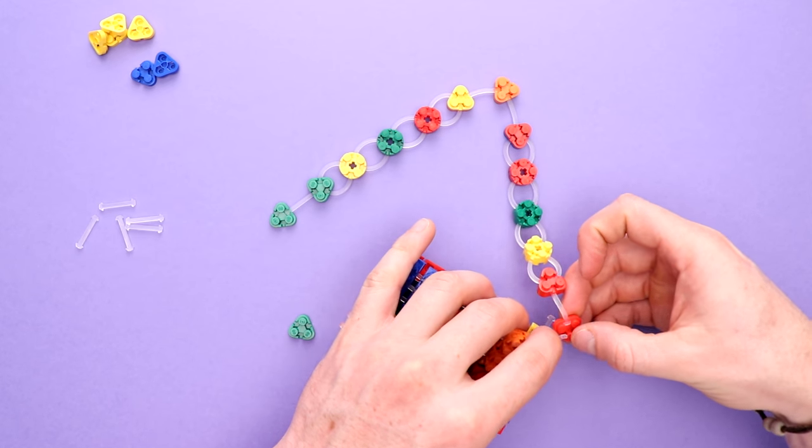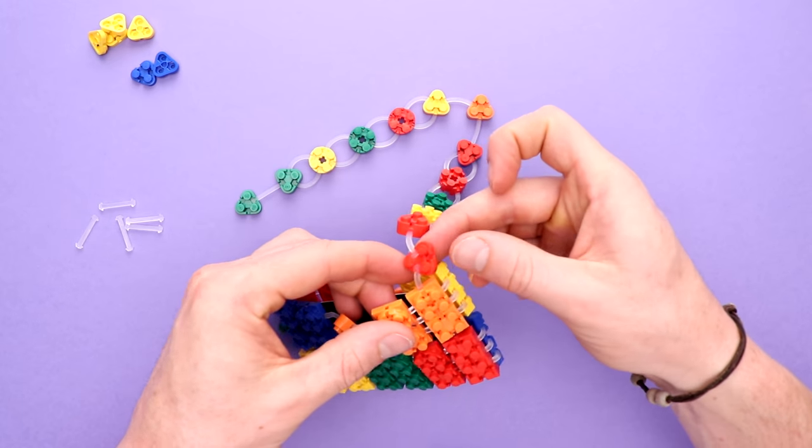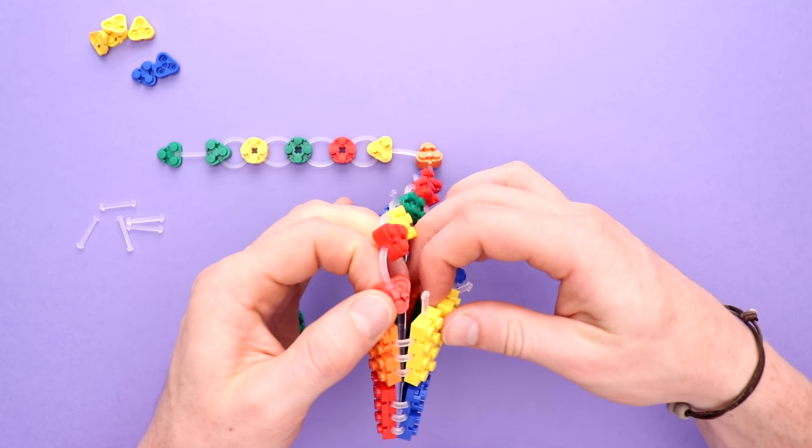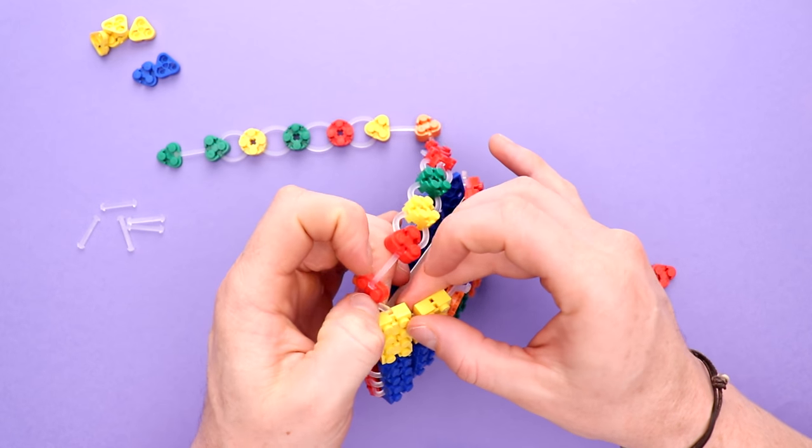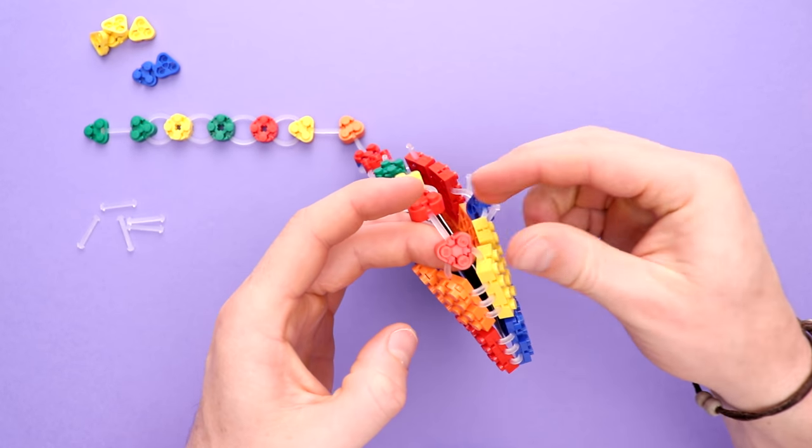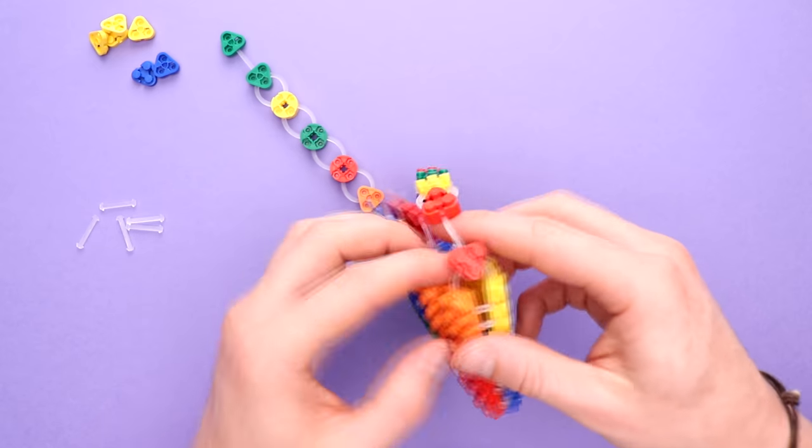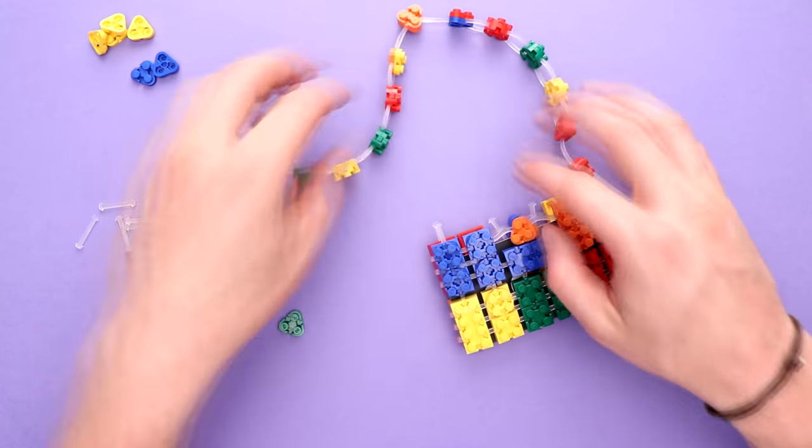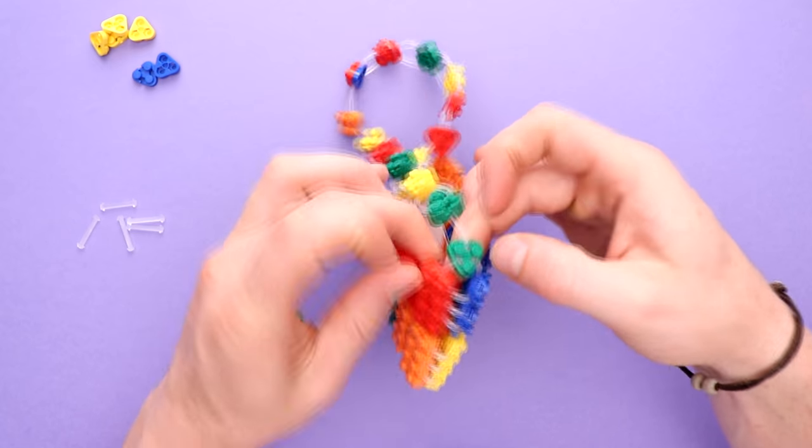So once we've connected all the bricks together, we then take our strap and connect it to our handbag. We do this by connecting our strap to those two T11 tendons that we put into the handbag earlier.